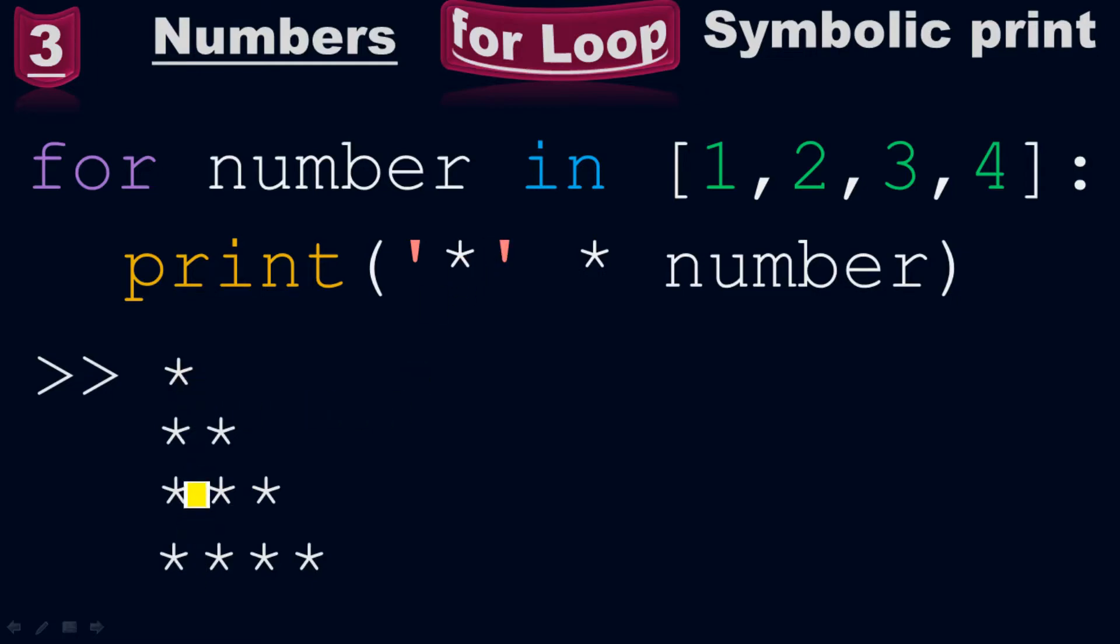Now look at here. The for loop iterates on each and every single number here in this list. First it iterates on 1, then on 2, then on 3, and then on 4.